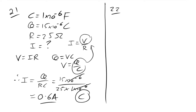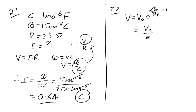Question 22: capacitor decay. V = V₀ × e^(−t/RC). At time t = RC (one time constant), this becomes V₀ × e^(−1) = V₀/e. The answer is B.